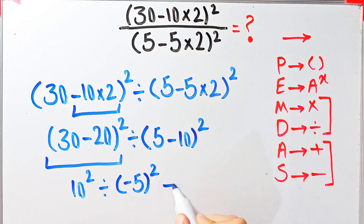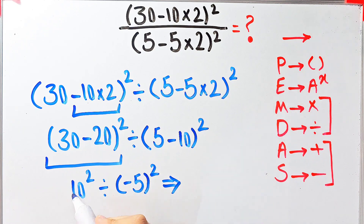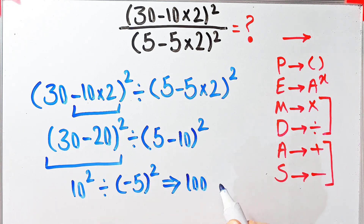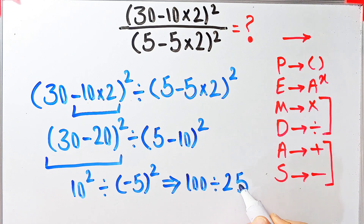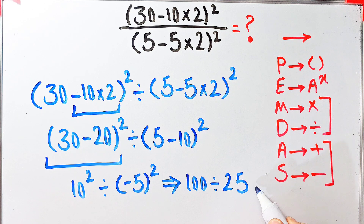10 to the power of 2 equals 100. 100 divided by negative 5 to the power of 2, which equals 25. And 100 divided by 25 equals 4. The final answer of this question equals 4.